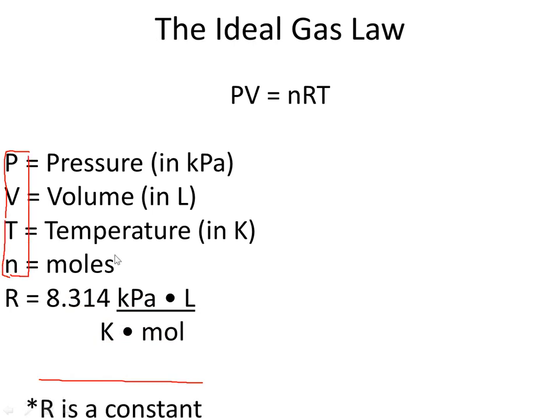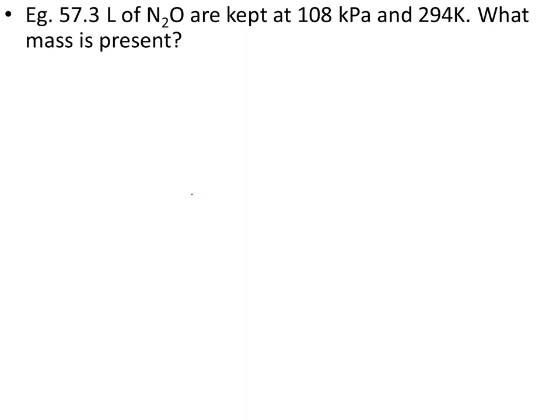So let's try a question out using the ideal gas law. So let's say we had 57.3 liters of any gas. It doesn't matter. We're treating them as if they're all ideal gases. And it's kept at a pressure of 108 kilopascals. And the temperature is 294 Kelvin. What mass of gas do we have present?